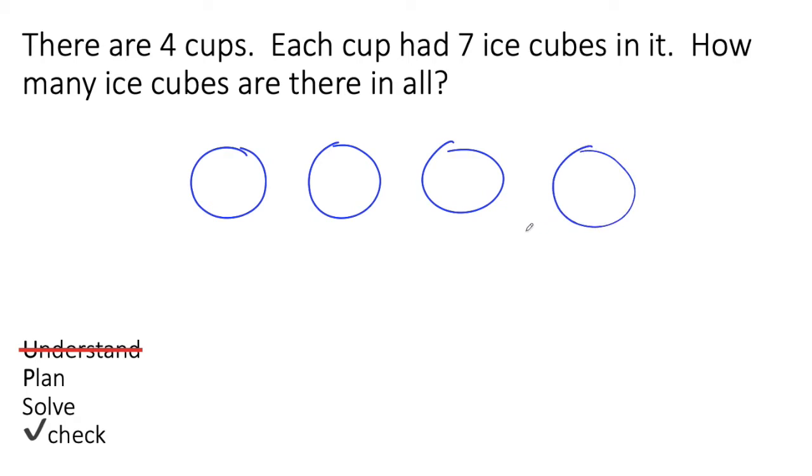Now it says each cup had seven ice cubes in it. Each cup - that means this cup has seven, this cup has seven, this cup has seven, and this cup has seven. So I'm going to draw seven in each cup like this. This cup has seven, this cup has seven, this cup has seven, and this cup has seven.